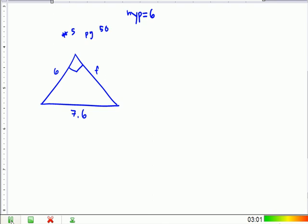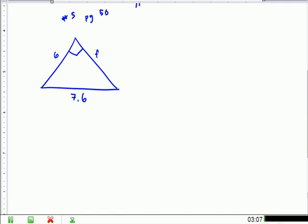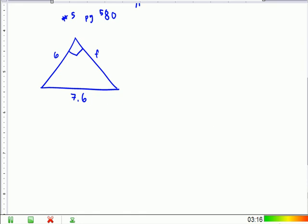All right, everybody. So here we are at number 5, page 580. Let's go ahead and get rid of this thing up here. Page 580. All right, so the direction is asked to solve a right triangle.